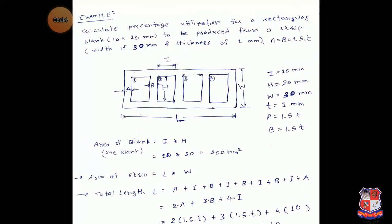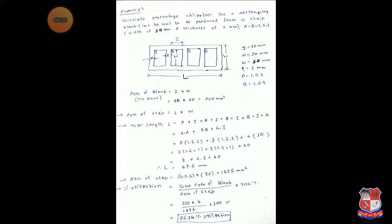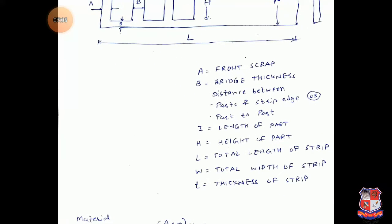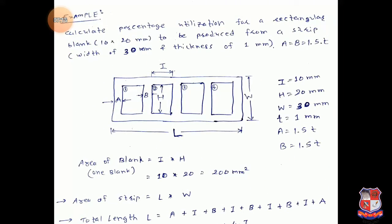Let us work through an example. Calculate the percentage utilization for a rectangular blank with dimensions 10 × 20 mm to be produced from a strip. The width of the strip W is 30 mm and thickness t is 1 mm. Also given: A = B = 1.5t, where A is the front scrap and B is the bridge thickness. From the figure, the length of one blank I = 10 mm and height H = 20 mm.